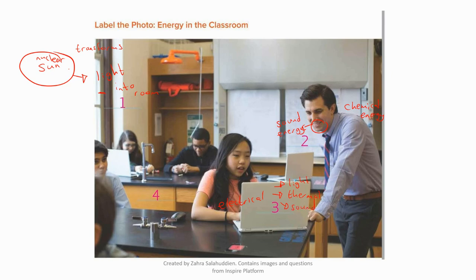Here at number four, we can see these students here are building a model. So as they build their model, inside of their bodies, they had chemical energy from the food they ate. And that energy then is transformed or changed into moving energy, as they move their hands to build the model.